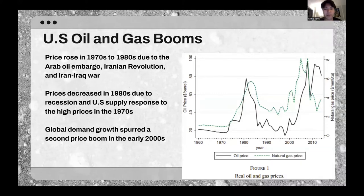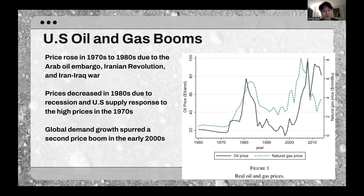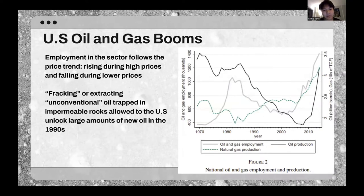Some background on U.S. oil and gas booms: prices rose in the 1970s due to a couple of conflicts, including the Arab oil embargo, the Iranian revolution, and an Iraq war. Then prices decreased right after due to a recession. The U.S. supply response to the high prices in the 1970s really boosted supply, but then in the early 2000s there was another boom in prices due to more global demand growth. Employment in the sector reflects and follows oil prices — when oil prices are high, employment tends to be high as well, and if oil prices fall, employment tends to also fall.